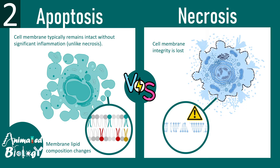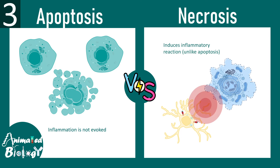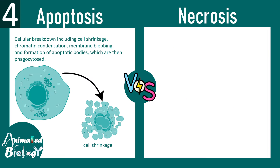In apoptosis there is blebbing of the cell, but each bleb has an intact membrane so the contents remain confined. Another key feature of apoptosis is that inflammation is not evoked — the cell dies but there is no inflammation in nearby tissue, so surrounding cells are not harmed. In necrosis, however, a strong inflammatory response and tissue damage can be evoked.